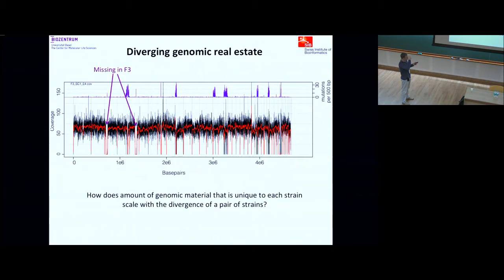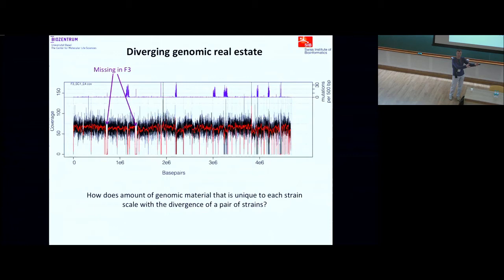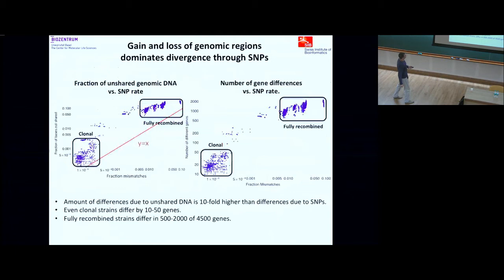Apart from mutations in the core genome, there are also gaps — regions that exist in one strain but not another. You can ask how the amount of genomic material unique to each strain scales with the divergence of a pair. So for each pair I ask: what is their total divergence, and how much DNA exists in only one of the two strains? You see that this is everywhere clearly above the line y equals x.